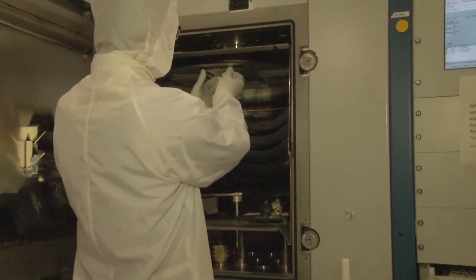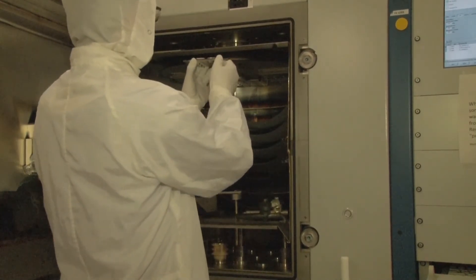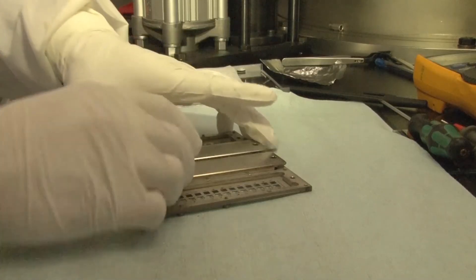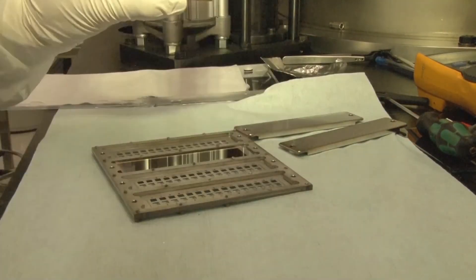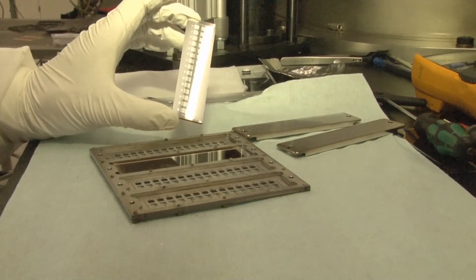After taking the solar cell out of the e-beam evaporation setup, we can see the final silicon solar cell on lab scale. Every metal contact represents a solar cell.